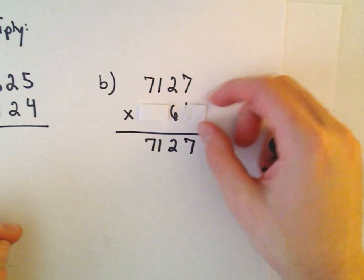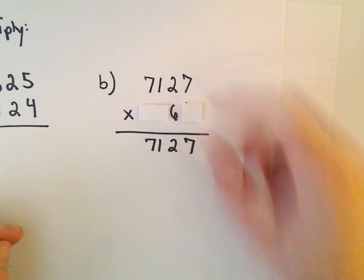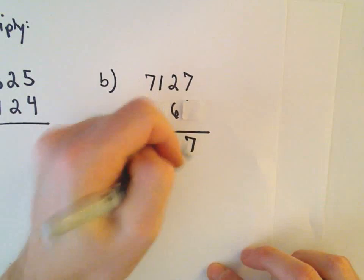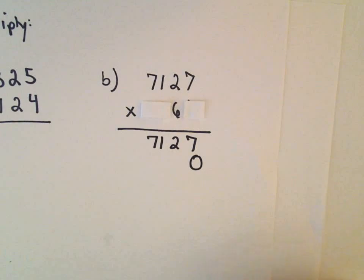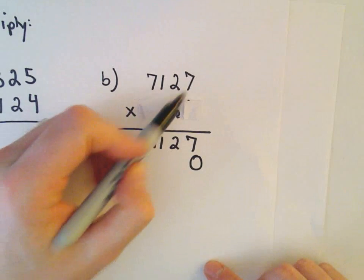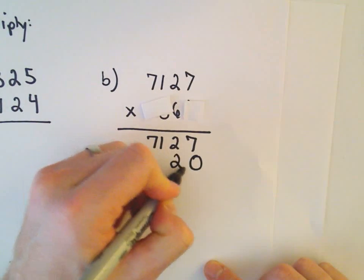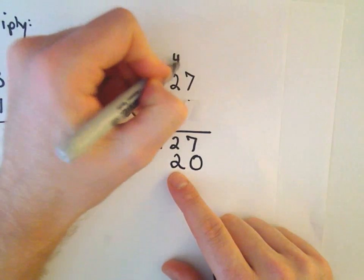Now I'm going to move to my next digit, which is the 6. Again, I've moved over one digit. I'm going to add a 0. Let's see, 6 times 7 is 42, so I'm going to keep the 2 and carry the 4.